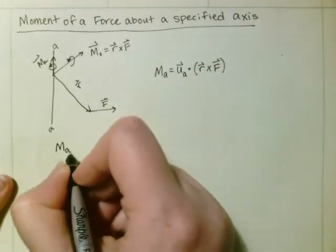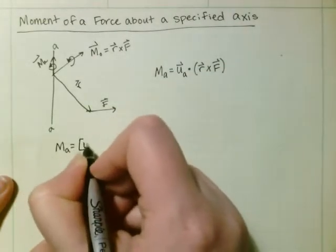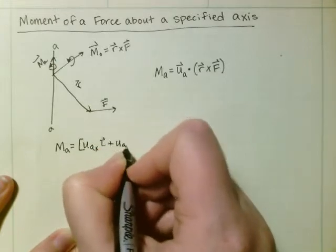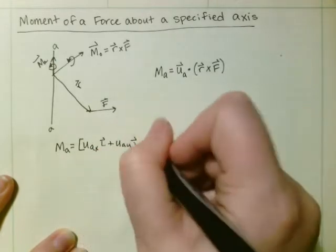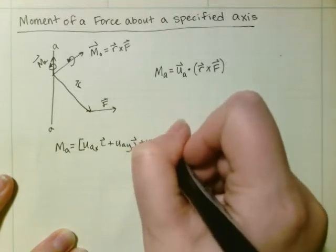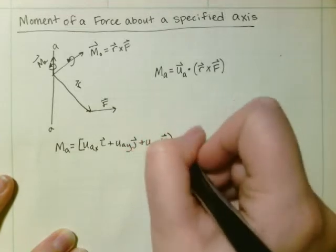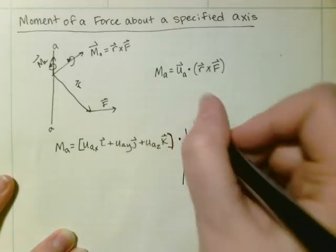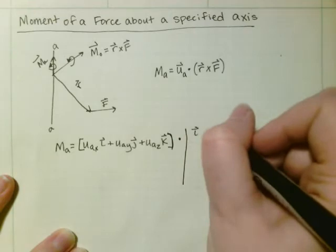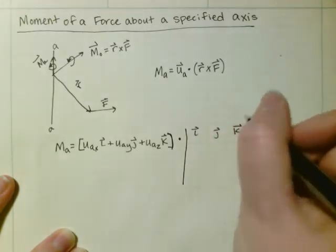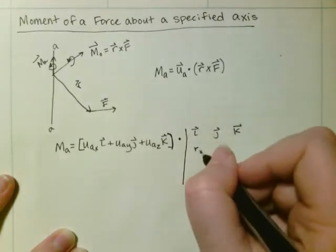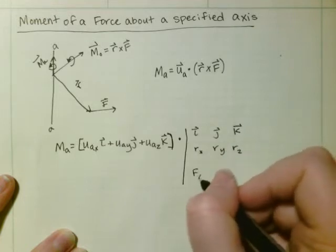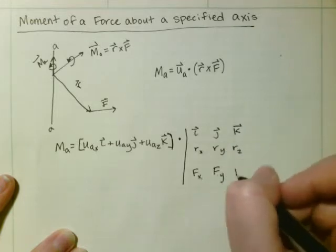it would be M_a is equal to u_ax i plus u_ay j plus u_az k, dotted with the determinant: i j k, r_x r_y r_z, F_x F_y F_z.